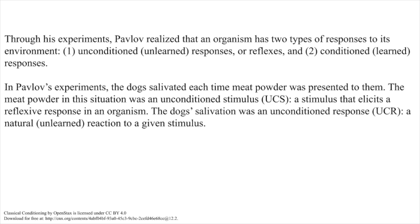Through his experiments, Pavlov realized that an organism has two types of responses to its environment. First, unconditioned, unlearned responses, or reflexes, and second, conditioned, learned responses. In Pavlov's experiments, the dogs salivated each time meat powder was presented to them. The meat powder in the situation was an unconditioned stimulus, UCS, a stimulus that elicits a reflexive response in an organism. The dog's salivation was an unconditioned response, UCR, a natural, unlearned reaction to a given stimulus.